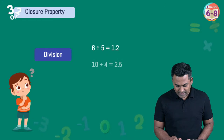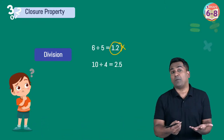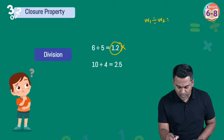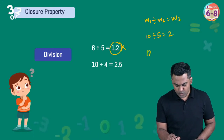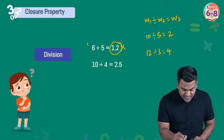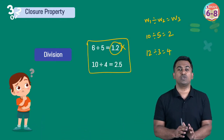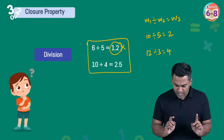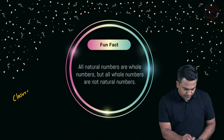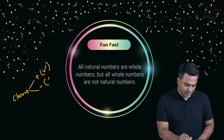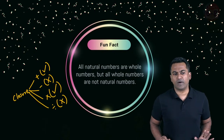The last operation to check for closure is division. Six divided by five is 1.2, which is not a whole number. It works for some cases — 10 ÷ 5 = 2, 12 ÷ 3 = 4 — but not every case. Since the property must hold in every single case, we say division does not follow the closure property.